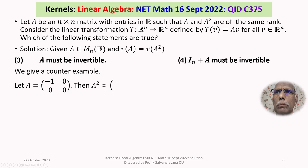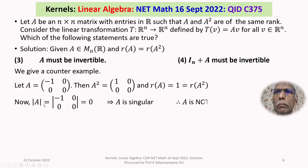Let A be the 2-by-2 matrix with first row (-1, 0) and second row (0, 0). Then A-squared equals the matrix with first row (1, 0) and second row (0, 0). The rank of A is 1 and the rank of A-squared is also 1, so rank(A) = rank(A²). The determinant of A is 0, meaning A is singular and therefore not invertible. Thus, option 3 is not true.